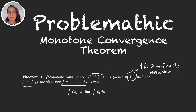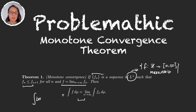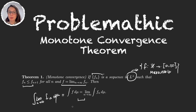The Monotone Convergence Theorem tells us that if this sequence is increasing and all these functions are measurable, then we can just calculate the limits of these integrals and that will give us the integral of f. So we can rewrite this as: the integral of f equals the integral of the limit of fn. This is integrating with respect to some measure μ on some measure space X with a sigma-algebra M and a measure μ — just any abstract measure space.